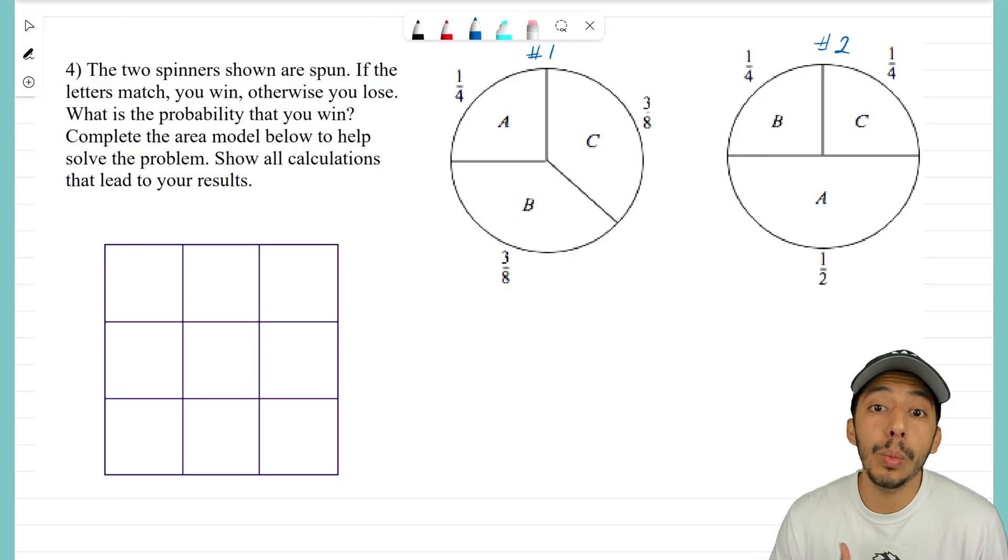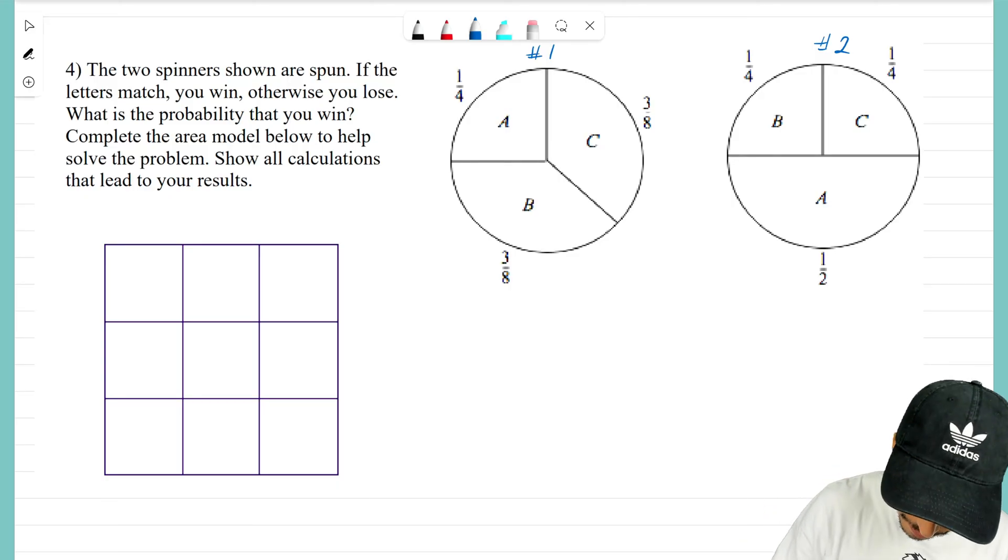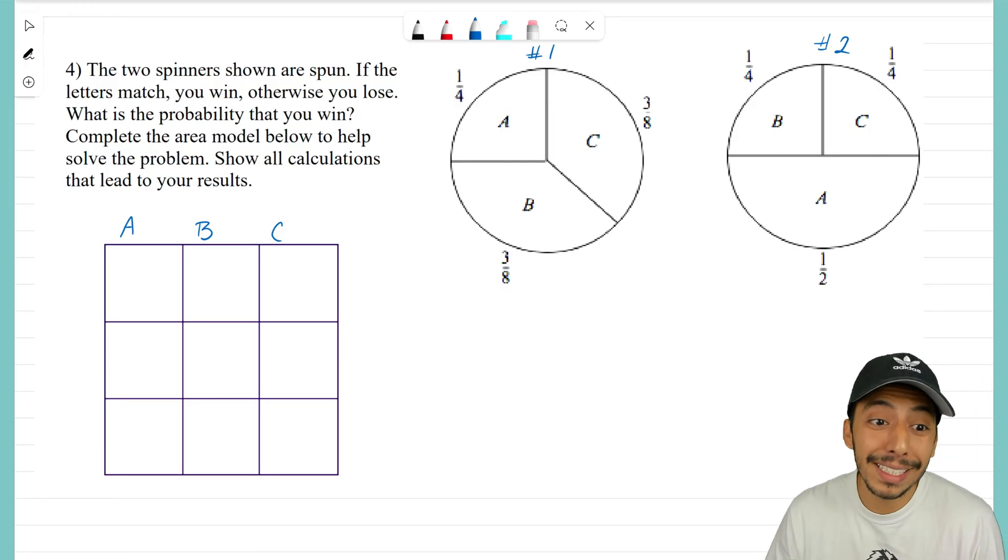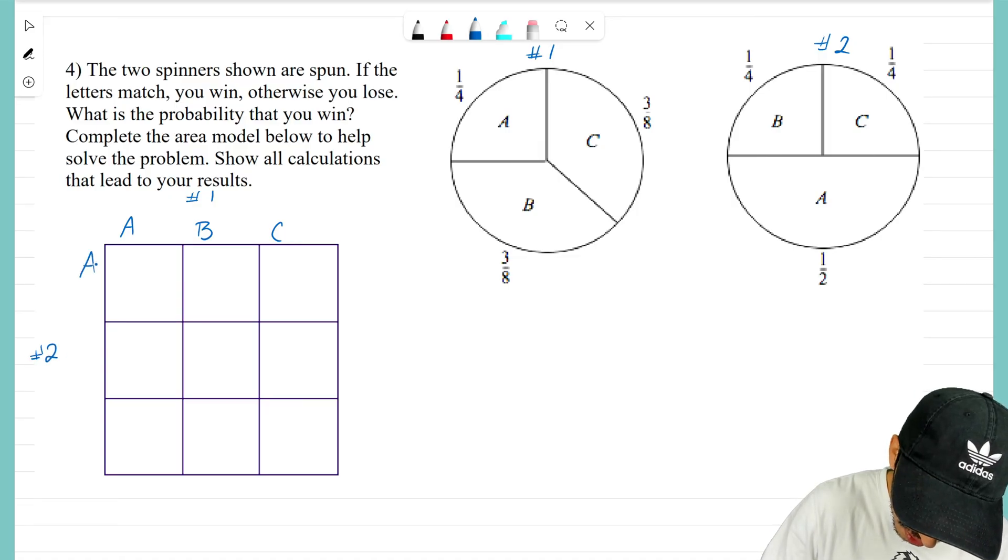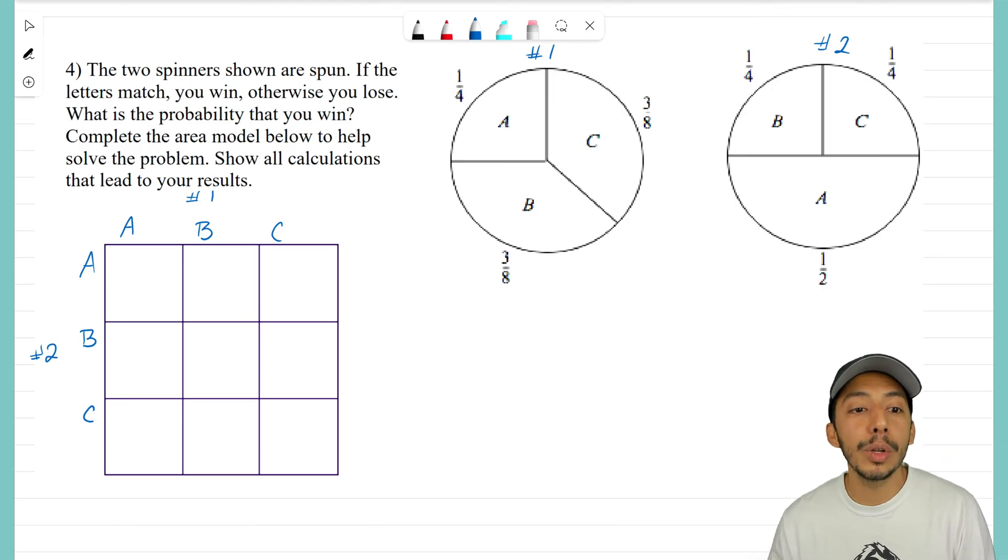So we need to figure out what our outcomes are. With spinner number one, I see that my possible outcomes end up being A, B, or C, and I think that's the exact same thing for spinner number two. Here I'll label this spinner number one and then this one spinner number two. This one is also going to be A, B, and C. Now notice that this area model is not going to be helpful unless we have those ratios—those probabilities of each letter next to our letters there.